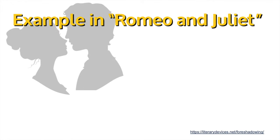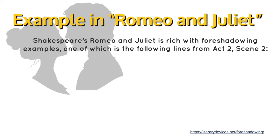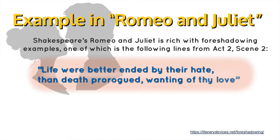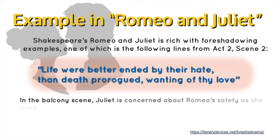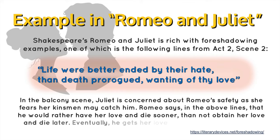Now let's take a look at an example in Romeo and Juliet. Shakespeare's Romeo and Juliet is rich with foreshadowing examples, one of which is the following lines from Act 2, Scene 2: 'Life were better ended by their hate than death prorogued, wanting of thy love.' In the balcony scene, Juliet is concerned about Romeo's safety as she fears her king's men may catch him. Romeo says he would rather have her love and die sooner than not obtain her love and die later. Eventually, he gets her love and dies for her love too.